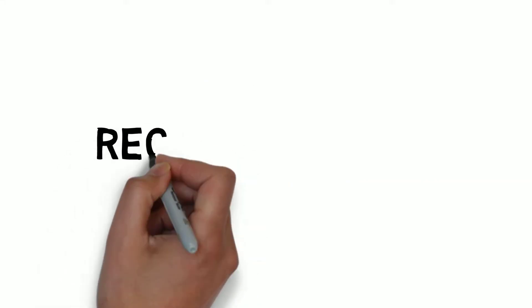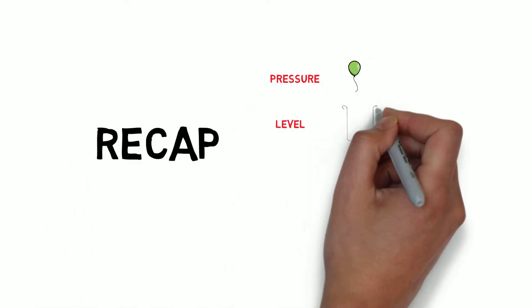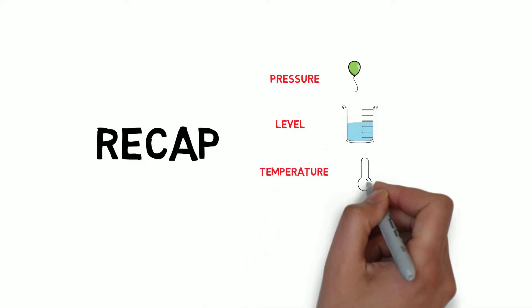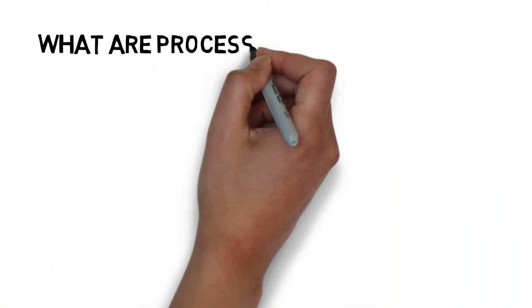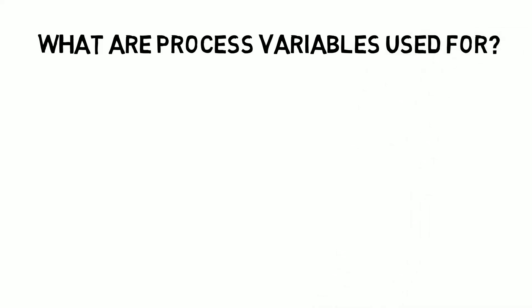To recap, the main types of process variables are pressure, level, temperature, and flow. These process variables are used in industry in a few distinct ways.